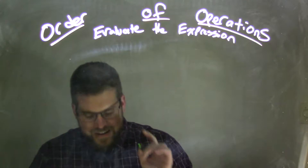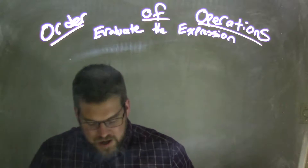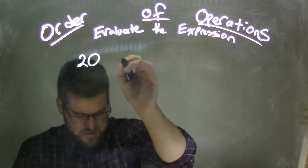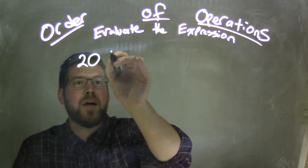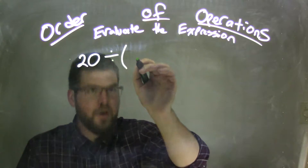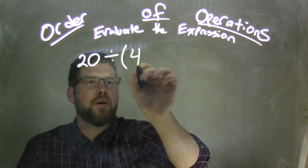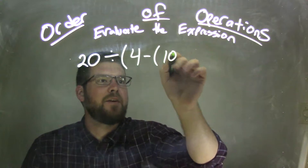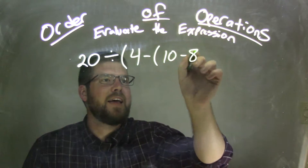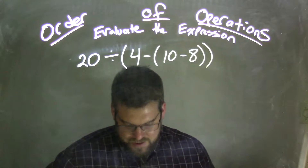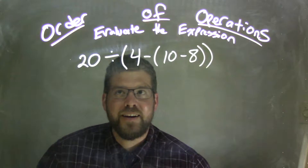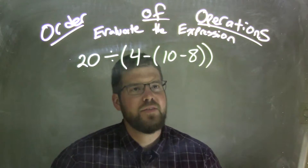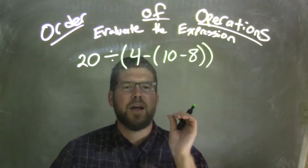So, if I was given this expression to evaluate — 20 divided by parentheses 4 minus parentheses 10 minus 8 — that's a tricky one, right? 20 divided by parentheses 4 minus parentheses 10 minus 8.